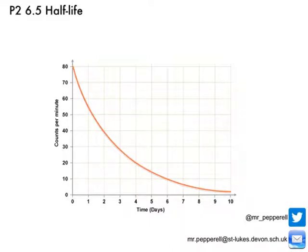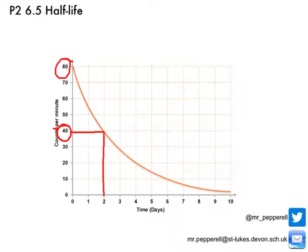From this graph, we can see that our count rate started out as 80. It fell down to a count of 40 counts per minute. If we look, we can see that actually took a total of two days. It started at 80 and it took two days for that count rate to reduce by a half. Then we can see the count rate halved again from 40 down to 20 — half of 40 is 20. And how long did that take? That started from two days and took until four days, so again two days for the count rate to half.